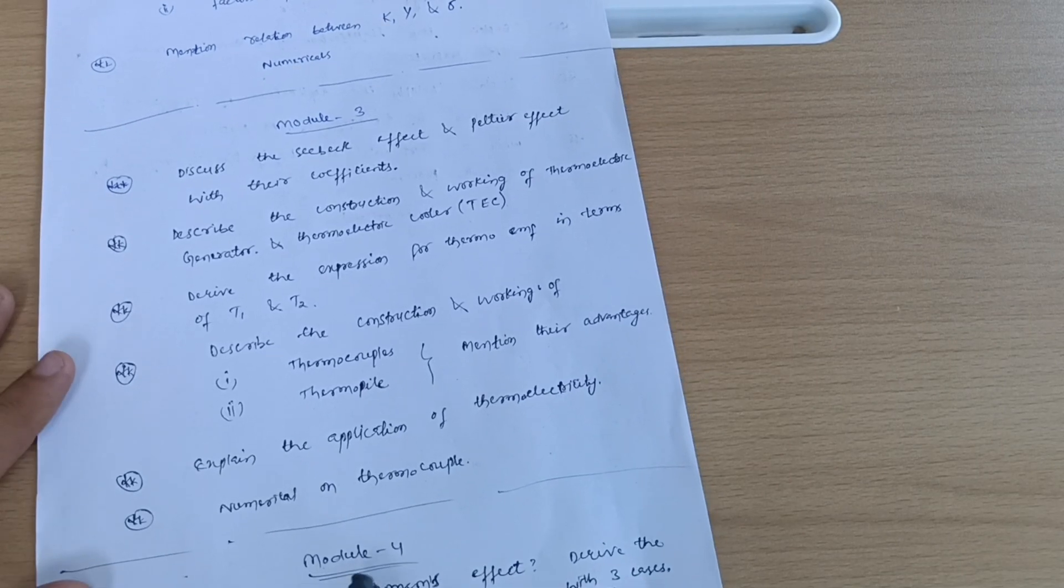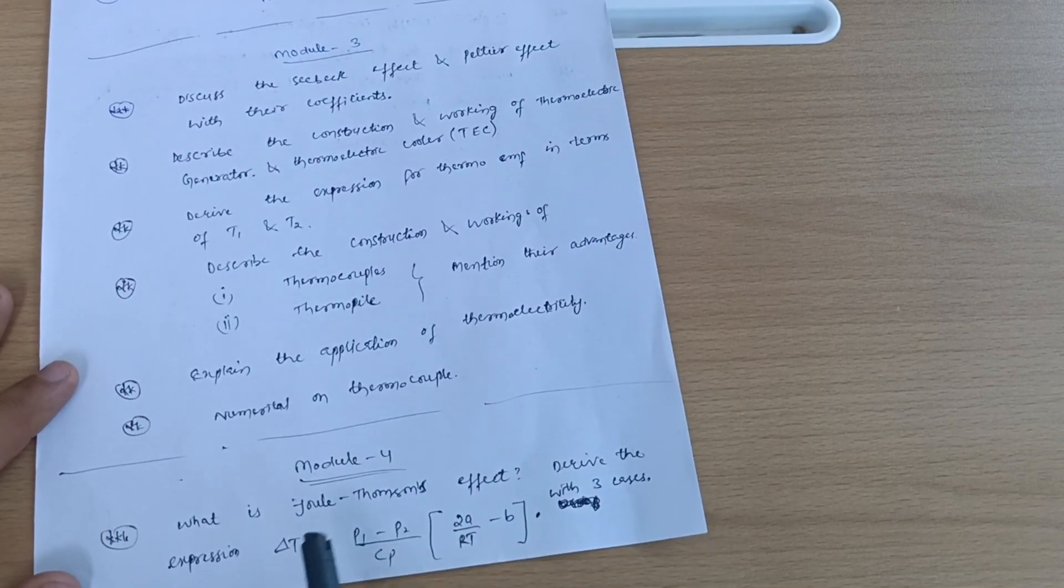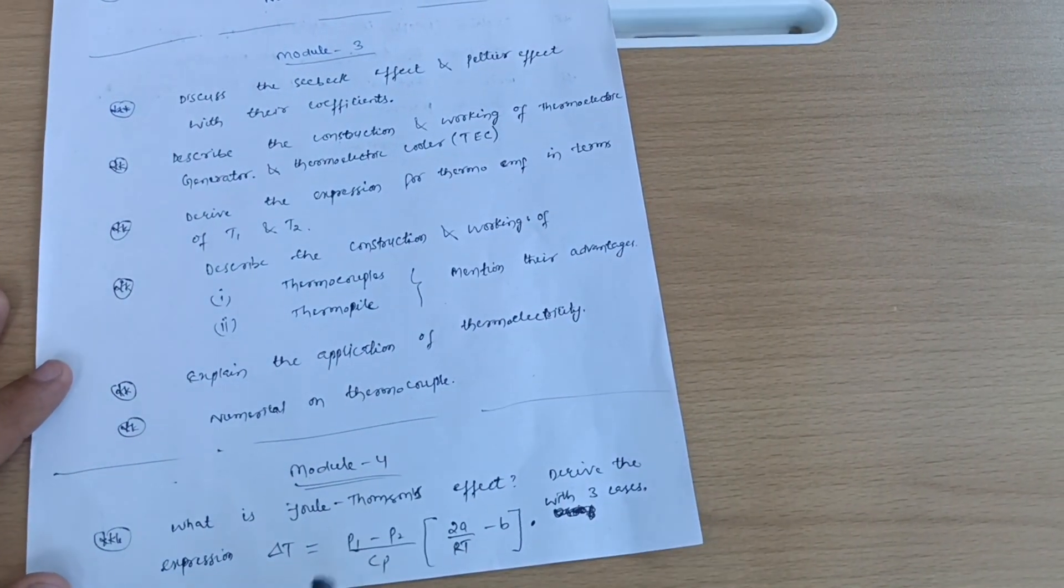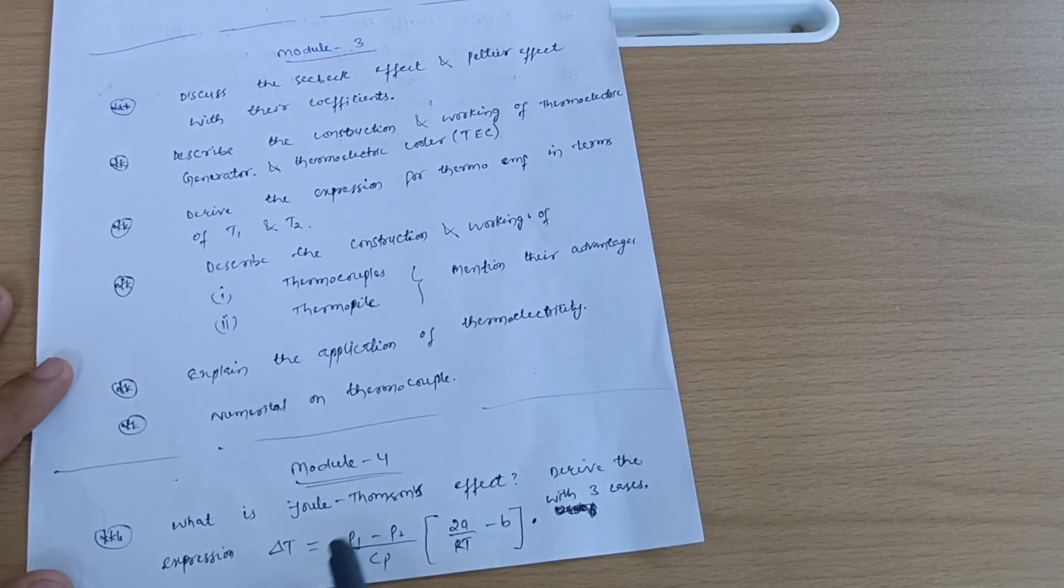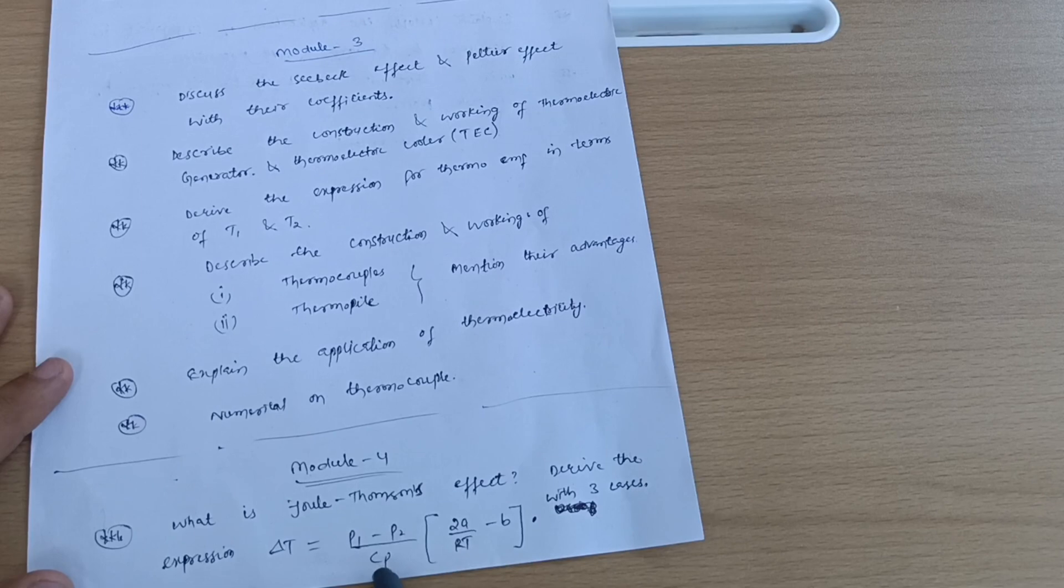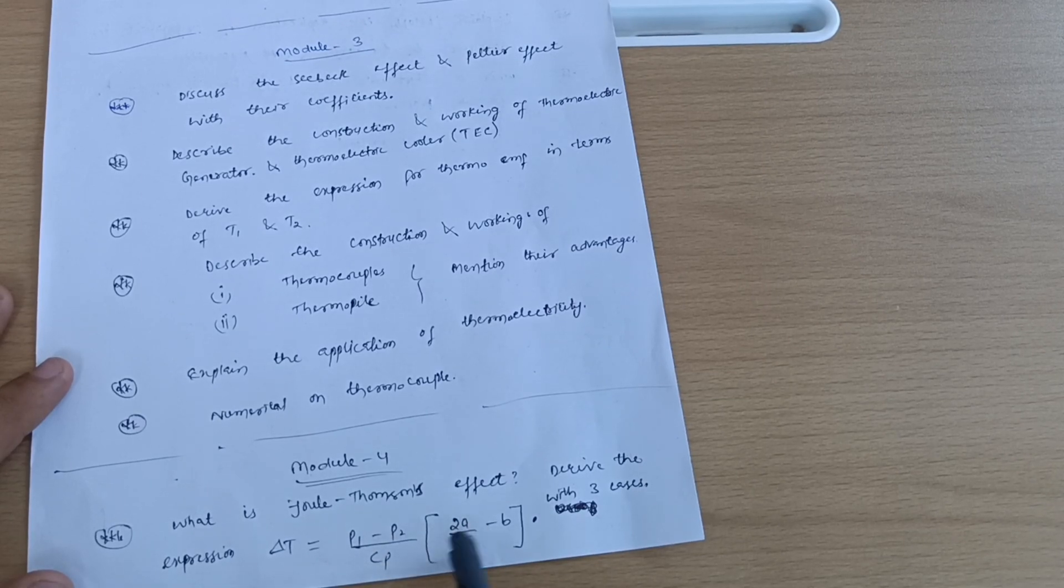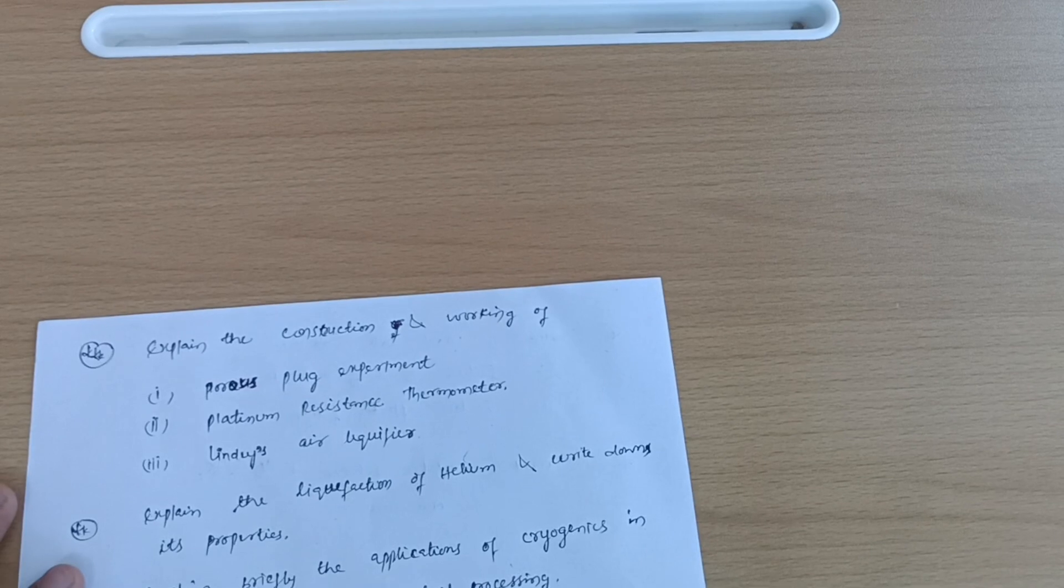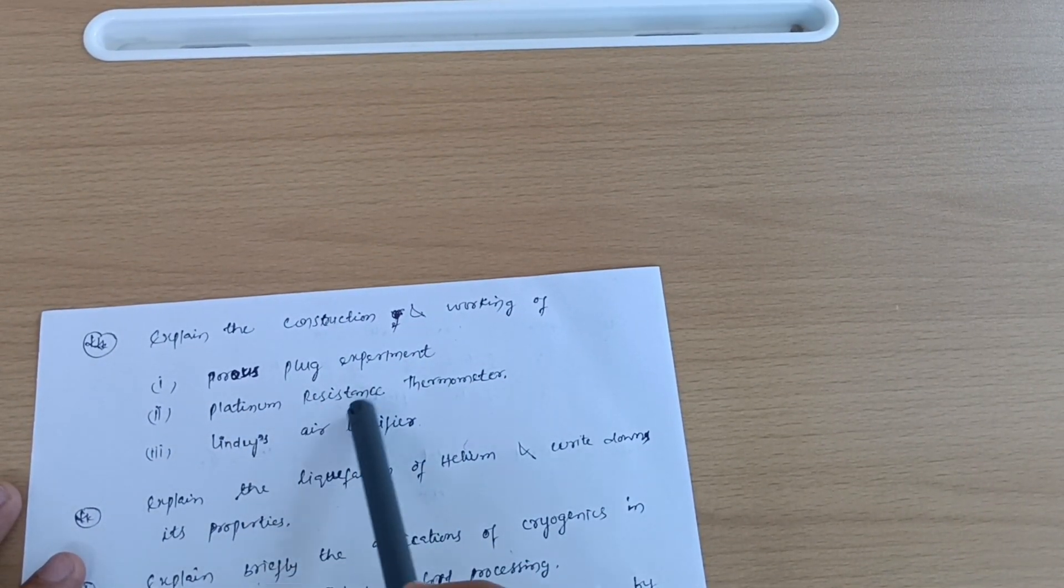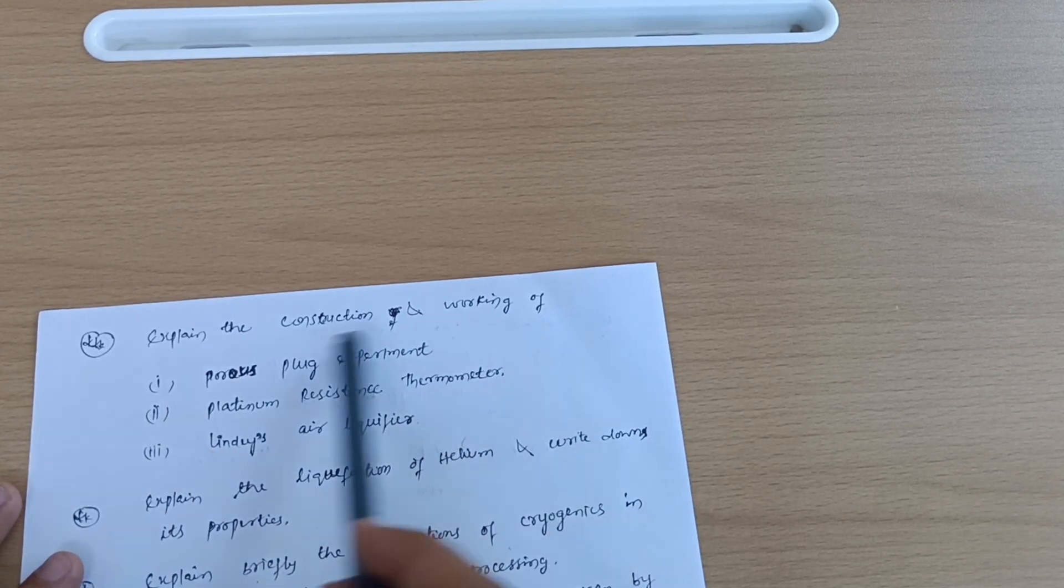Module 4: what is Joule-Thomson's effect? Derive the expression delta T equals P1 minus P2 divided by Cp multiplied by 2a/RT minus b with three cases. Explain the construction and working of porous plug experiment, platinum resistance thermometer, and Linde's liquefier. Go through the construction part as I discussed earlier - it is worth four marks if the question is for eight marks.